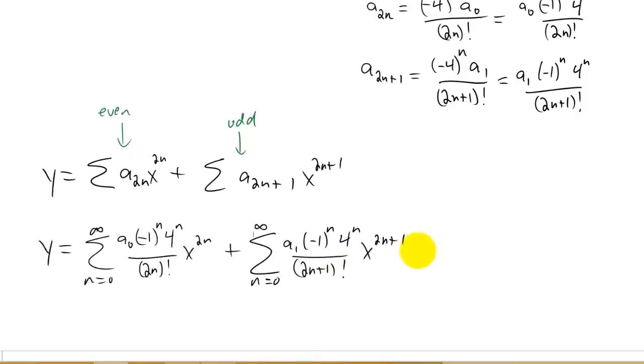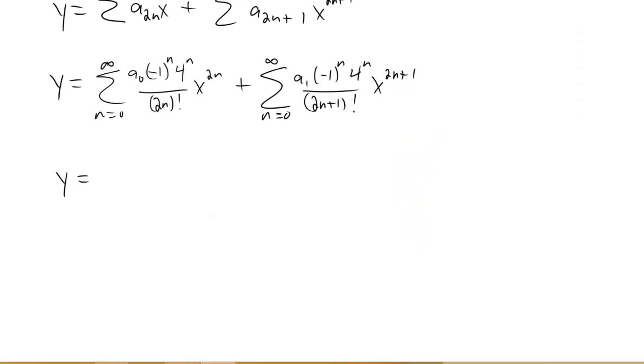About writing this in a nicer form than what we have. I'm going to pull the a naught, the constant, out of the summation. I'm going to pull the a1 out of this summation. I'd really like to group these two terms together. It's actually really easy to group the 4 to the n and the x to the 2n power together because 4 to the n is the same as 2 squared to the n, which is 2 to the 2n power. So I'm going to rewrite my 4 to the n as 2 to the 2n here.